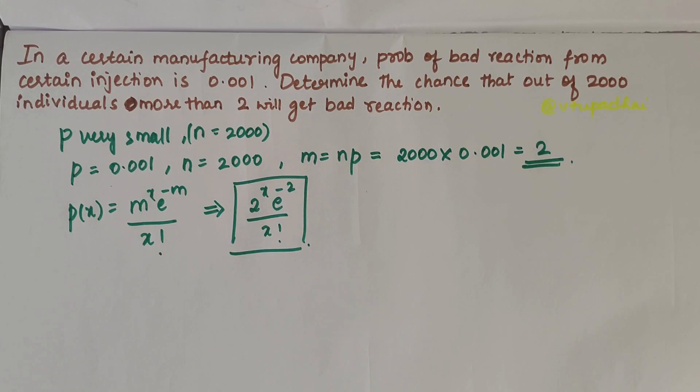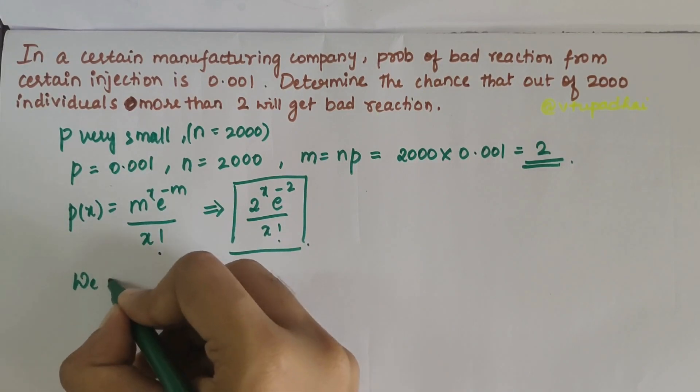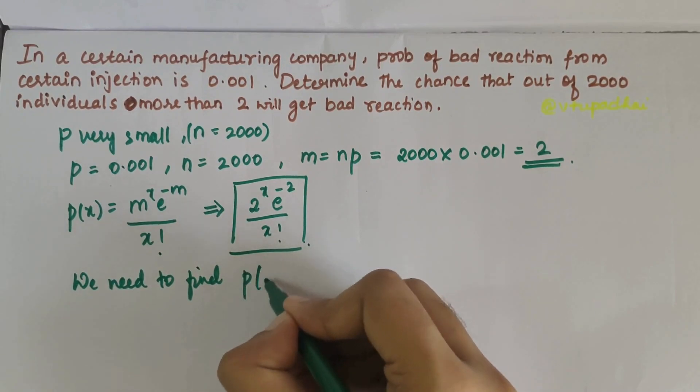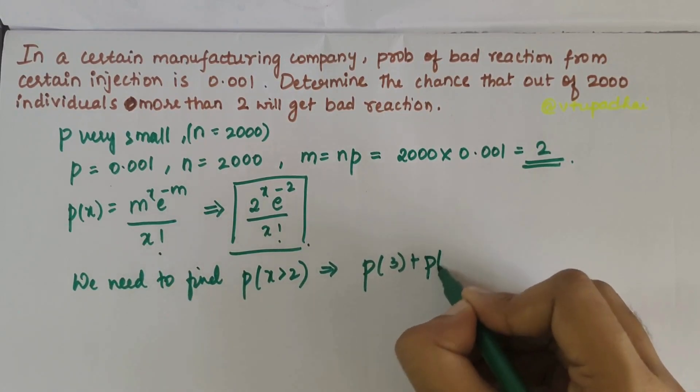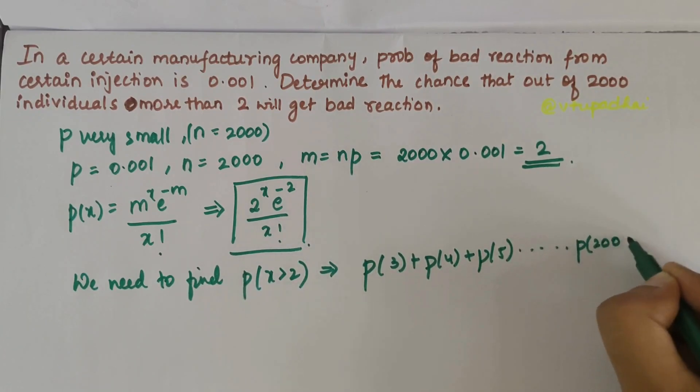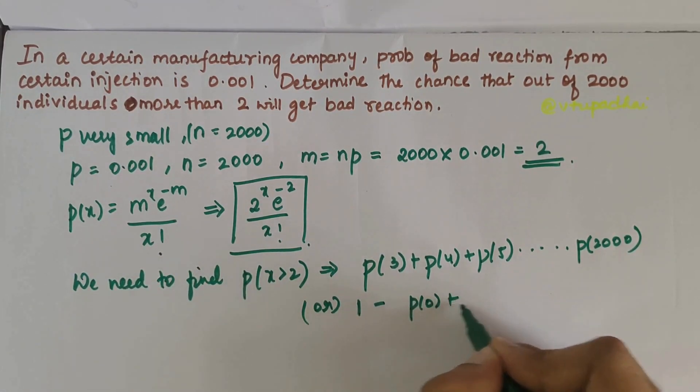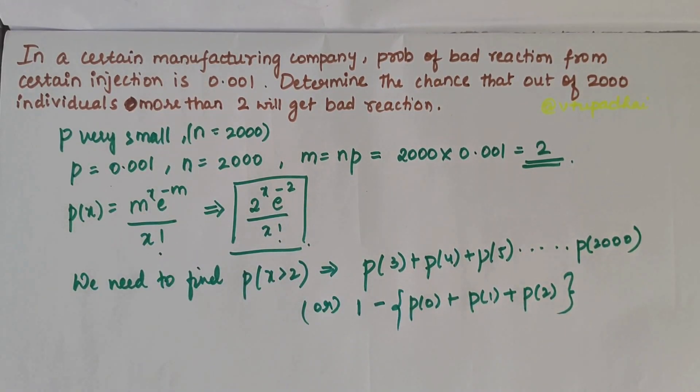In the question, they ask us to find the probability that more than 2 will get a bad reaction. So we need to find P(X > 2), which can be written as P(3) + P(4) + P(5) + ... + P(2000), or equivalently, 1 - [P(0) + P(1) + P(2)].